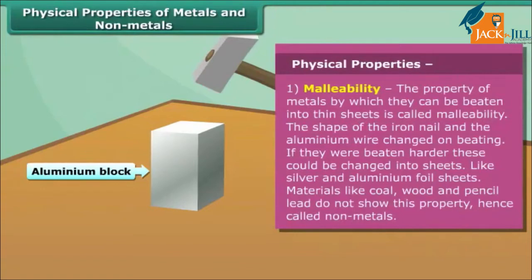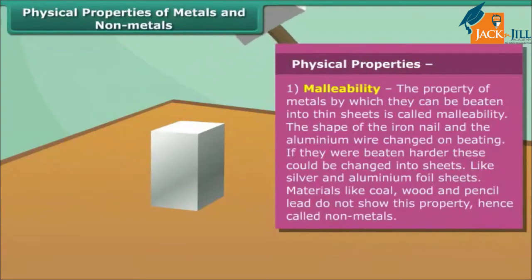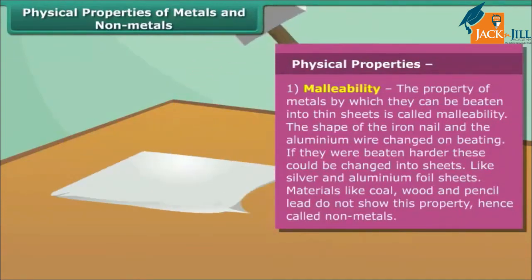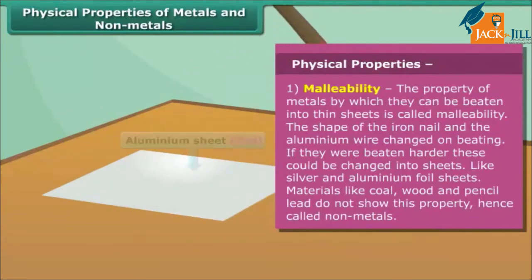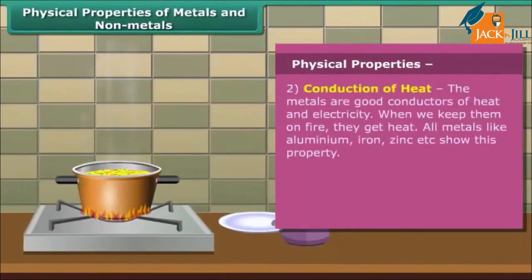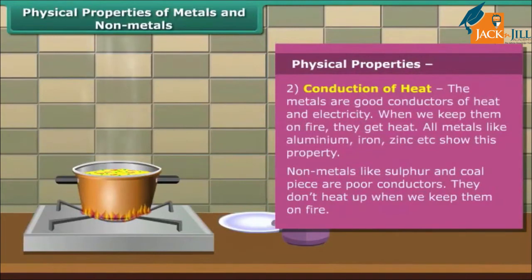The first property of metal is its malleability. By this property, metals can be beaten into thin sheets. Non-metals don't show this property. The next property is conduction of heat — metals are good conductors of heat and electricity, while non-metals are poor conductors.